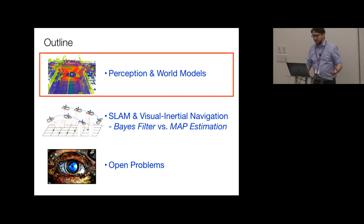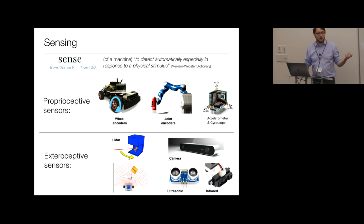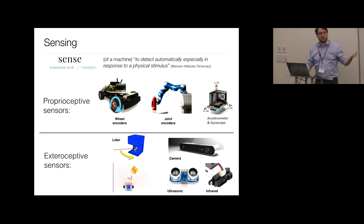Sensing is about measuring physical stimuli from the environment. The first taxonomy I want to introduce is the difference between proprioceptive and exteroceptive sensors. Proprioceptive sensors measure the internal state of the robot — for example, wheel encoders, which measure the rotation at the wheels, or motor encoders measuring rotation at the joints of a robotic arm.